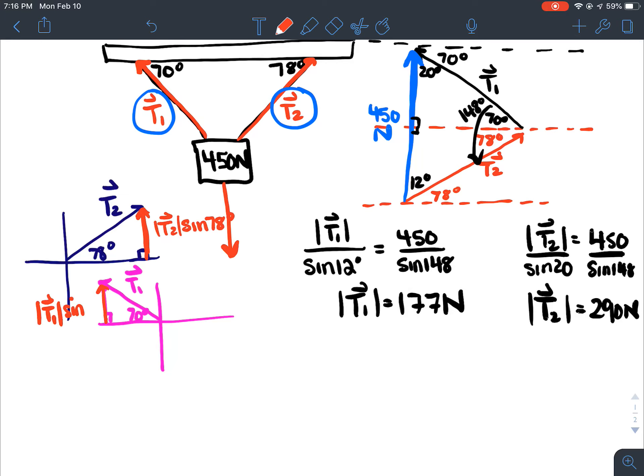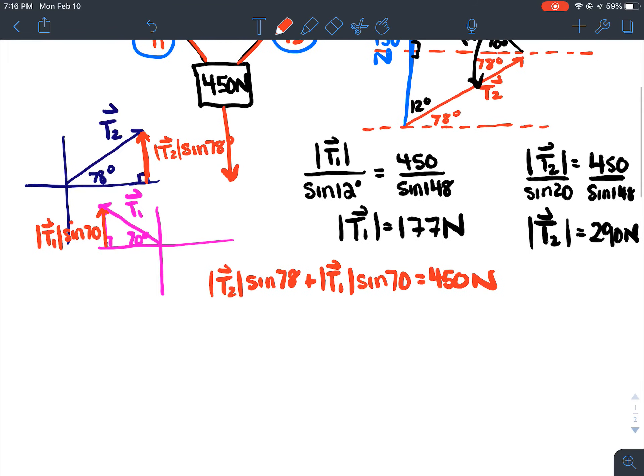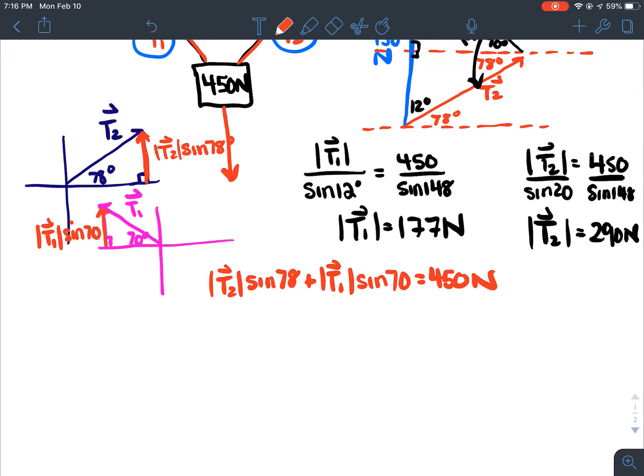So T1 sine 70, you could say. And then you can make an equation that's like T2 sine 78 plus T1 sine 70 is equal to 450 newtons. So you could say that. And then you can't solve that because you have two unknowns. So then you can make another expression that's like for your x components.